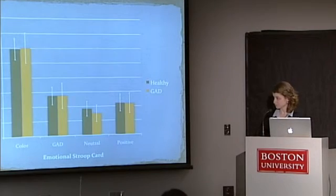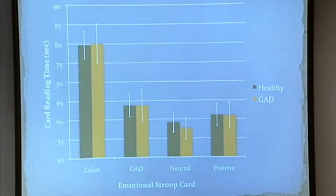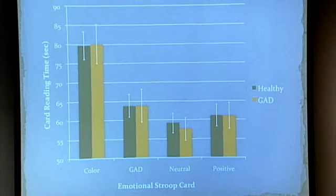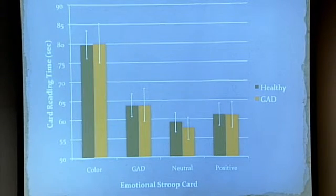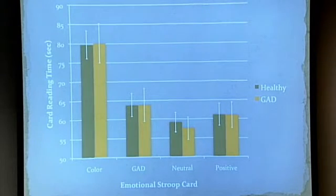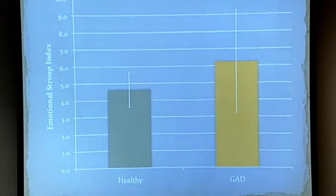Here are the results. For the emotional Stroop task, there was no difference between groups on any of the particular cards. There was also no difference between cards for the Generalized Anxiety Disorder group — the threatening word card was not more distracting than the neutral or positive card. There was a significant effect for healthy participants where the GAD word card was more distracting than the neutral and positive cards. The emotional Stroop index — the difference between reading time on the threat card and the neutral card — was not statistically significant between the two groups.